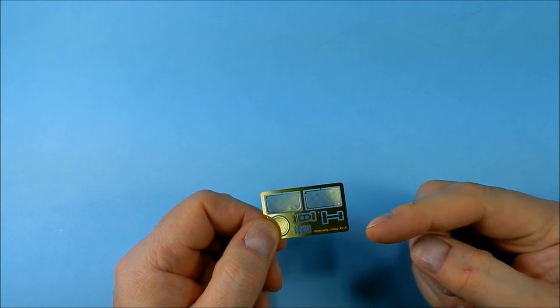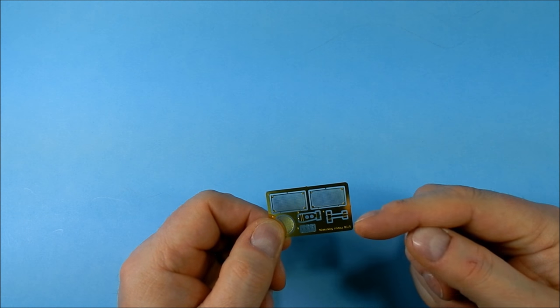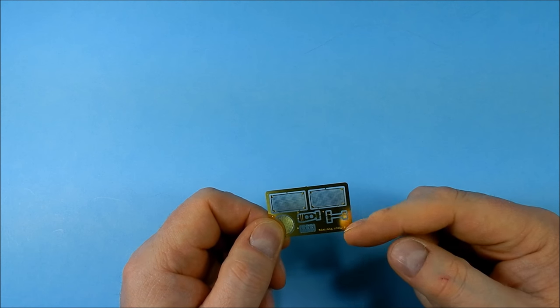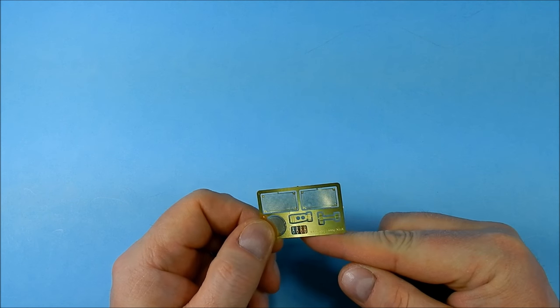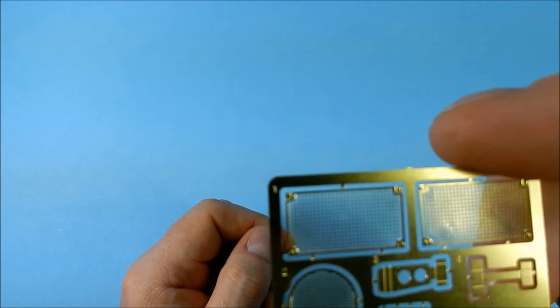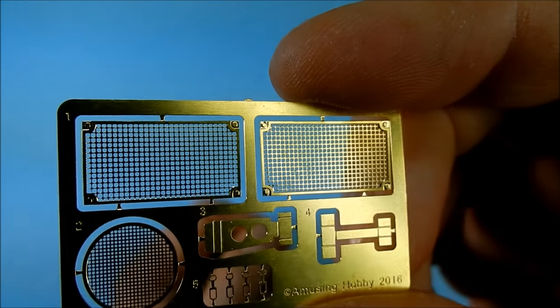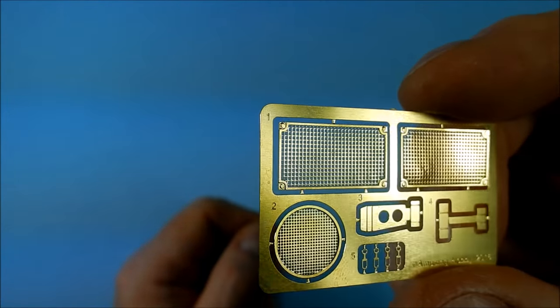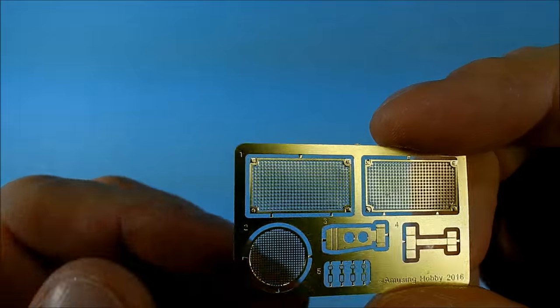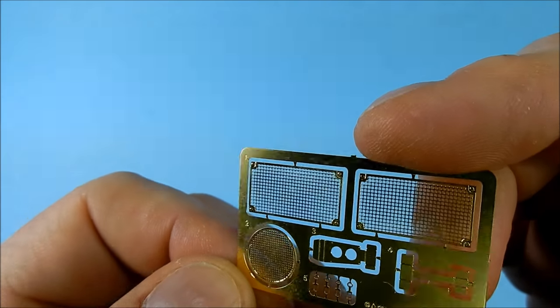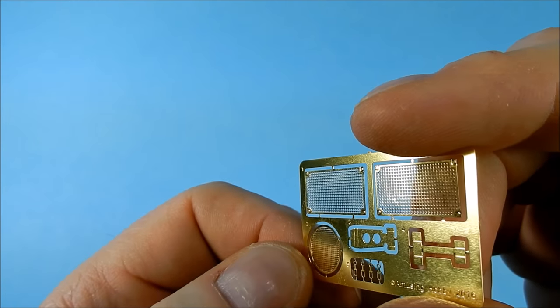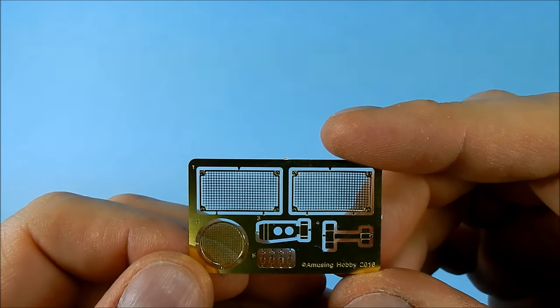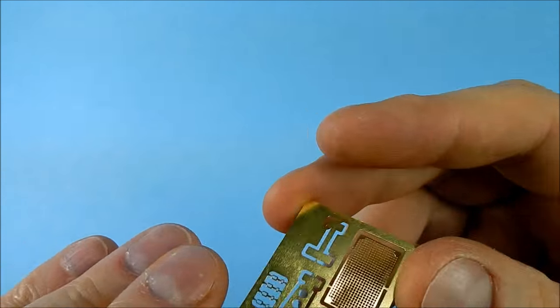So this is photo etch fret X, this gives you your intake and radiator fan covers. There is a sledgehammer tool frame, the tool frame for something else I can't remember what it was, and your toolbox clasps for your storage boxes on the back. So they're okay, they're a lot better than what Tamiya would give you, heck of a lot thinner as well. Not as nice as say Voyager, Lion Roar, Aber, any of those guys but still it's fairly decent for what it is.